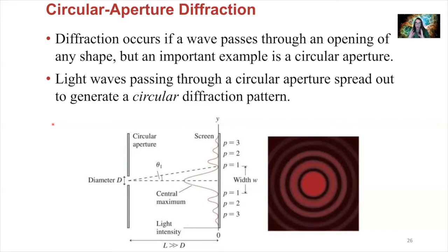Diffraction through circular apertures happens in telescopes — you've got a circular opening. It happens in microscopes — you've got a circular opening. It happens in our eyes; we've got the circular opening of our pupil. We'll talk more about the optics of our eyes later, but diffraction is also happening inside our eyes, and it impacts our ability to resolve distant objects, which we're also going to talk about here.